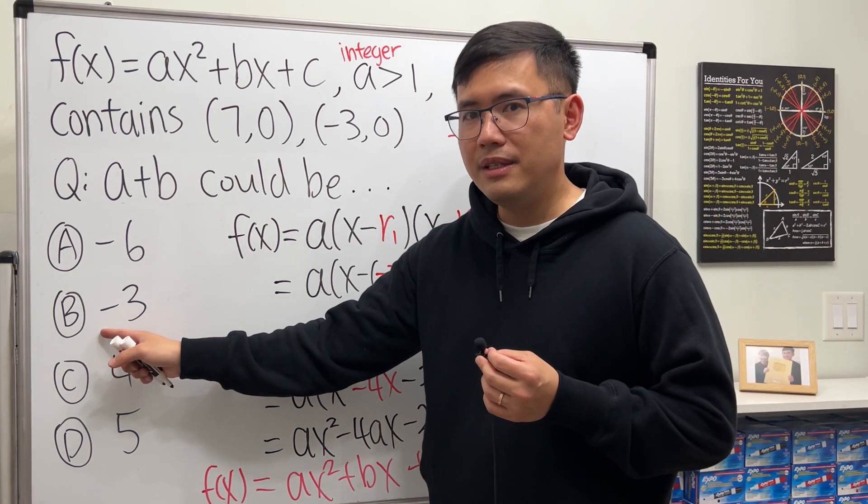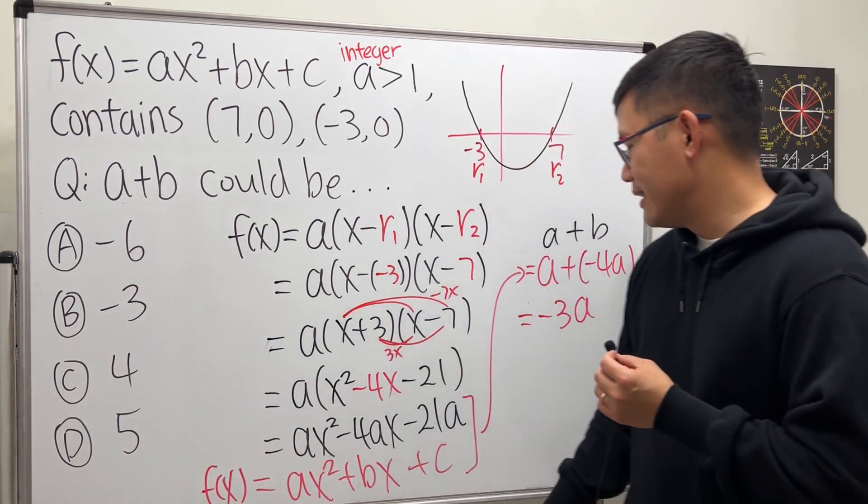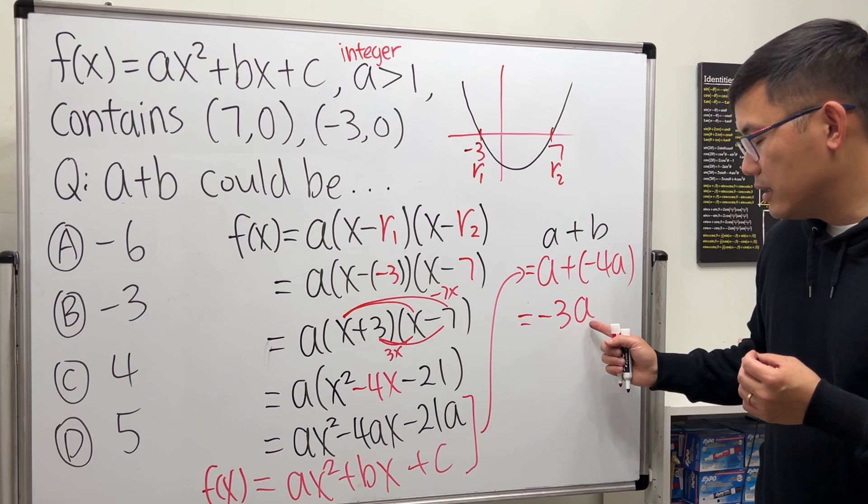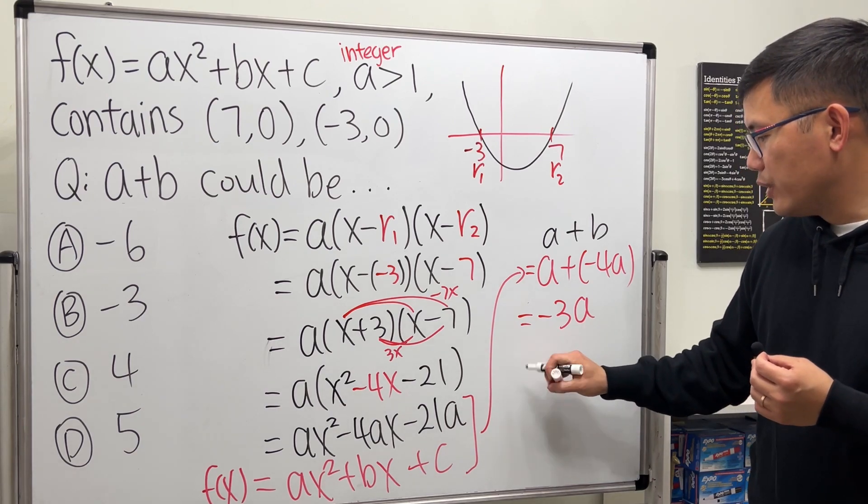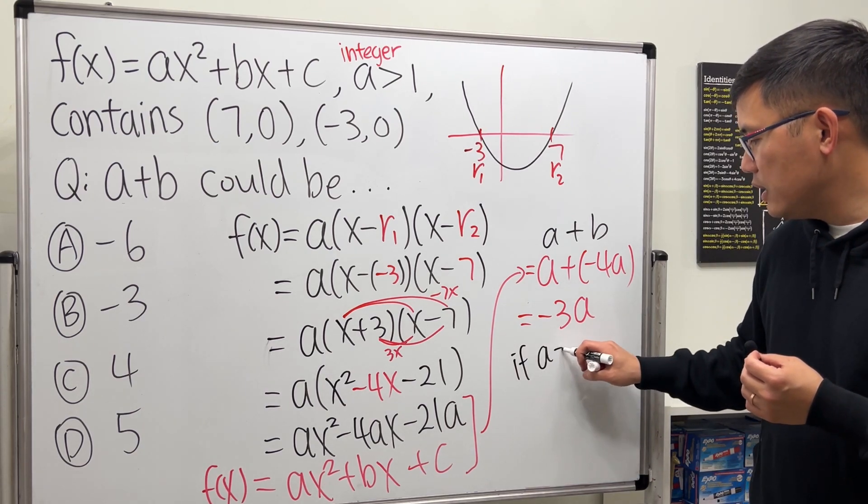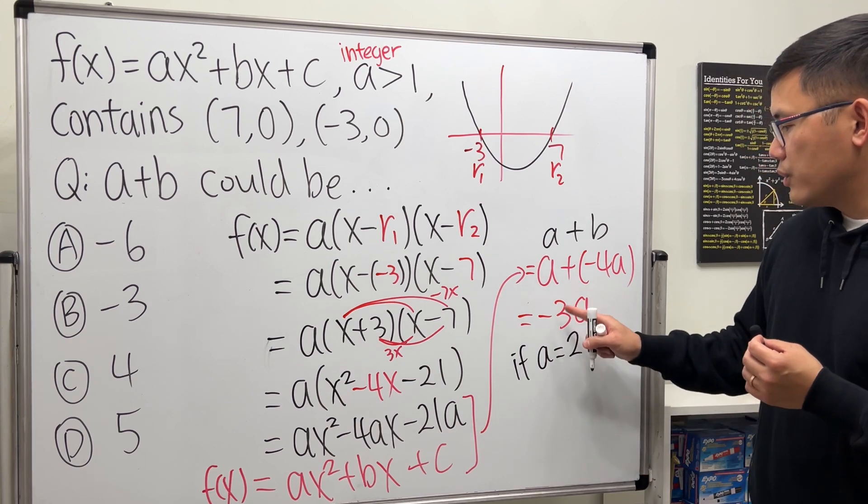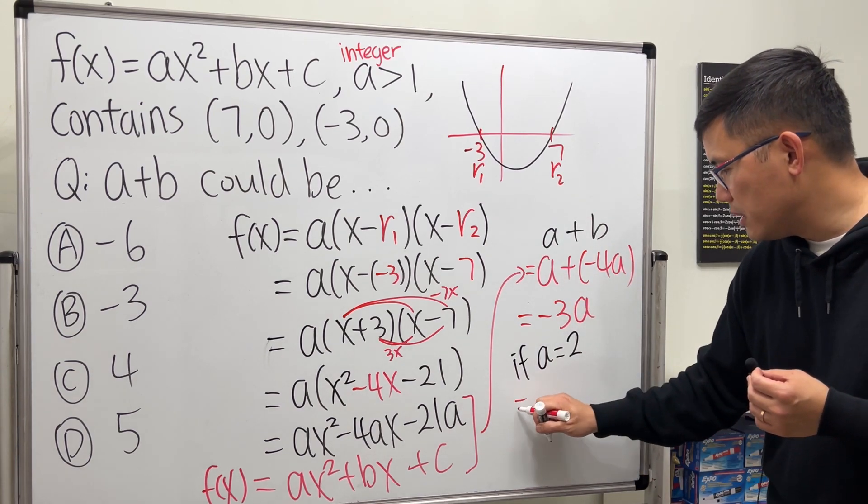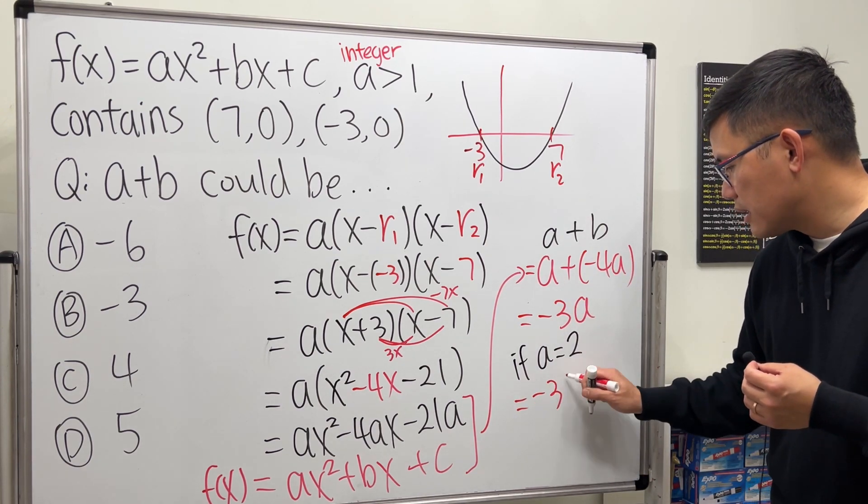B right here cannot be the answer. Right here, if we let a equals 2, then we see the result will just be -3 times 2, and that will give us -6.